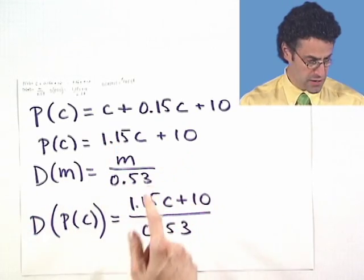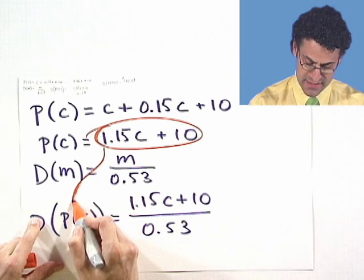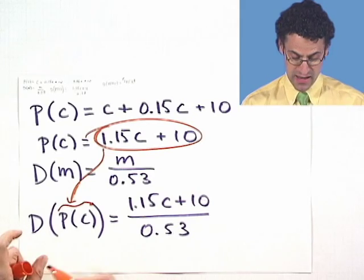Again, I took this function here and I use that as the input into here. And so here's the M and I now replace it by that. And so there's the function.